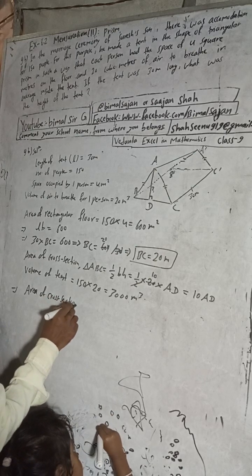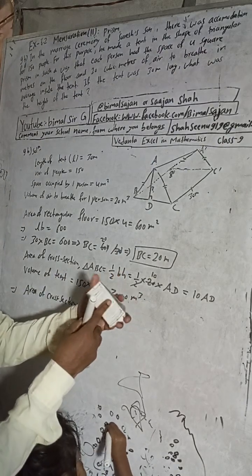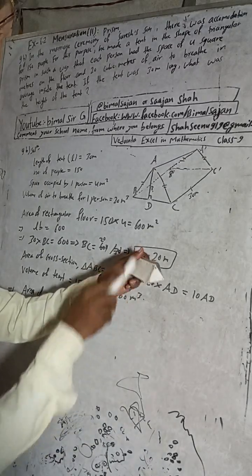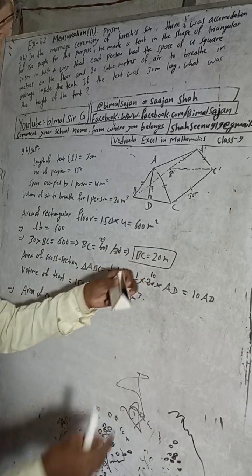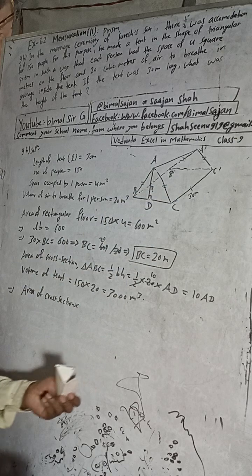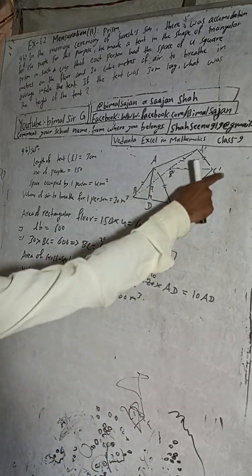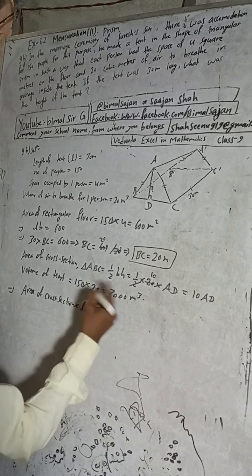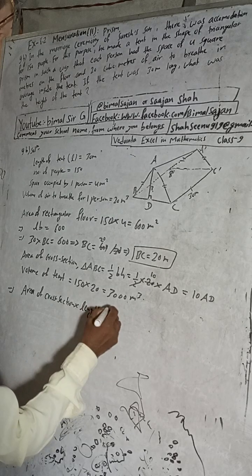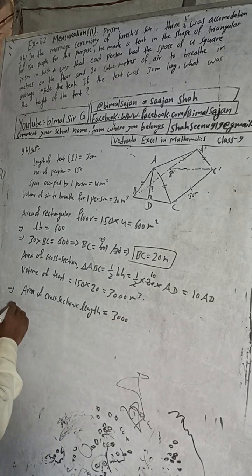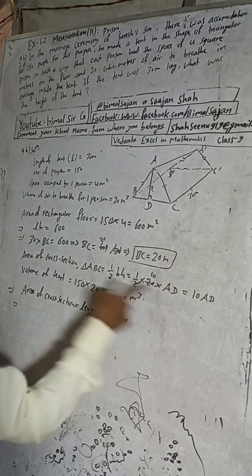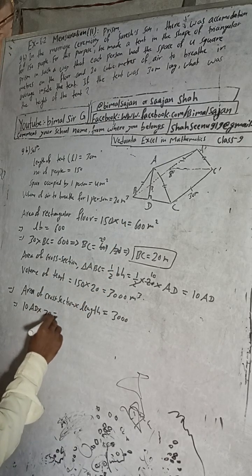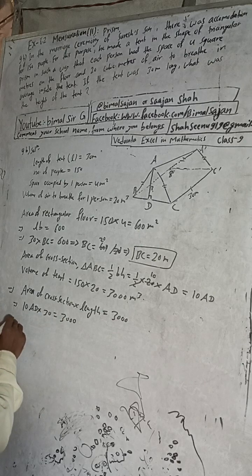And also the volume of the tent is what? Volume of tent, this volume of tent, is area of cross section into length. Volume of the tent will be what? Front area, this area, this is called cross section area. When you cut from this way, you will get same this triangular shape.